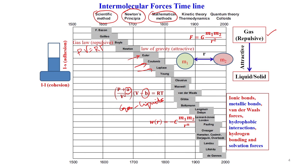A classical example of attraction and repulsion is capillary action. There are two kinds of interaction: liquid-liquid (cohesion) and liquid-solid (adhesion). In a capillary tube, the liquid-liquid interaction prevents capillary rise, while the liquid-solid interaction promotes it. This is a classical example where both adhesive and cohesive forces are observed.